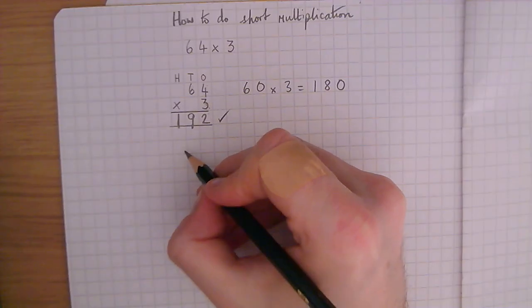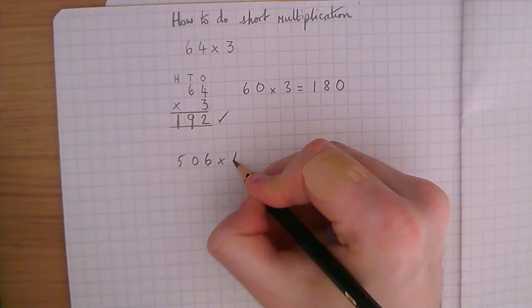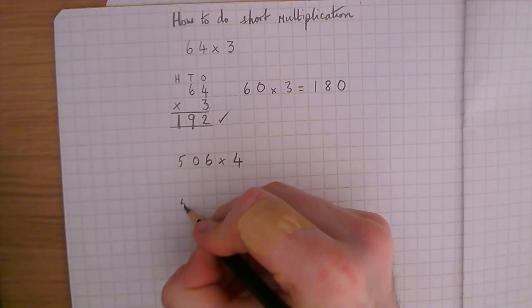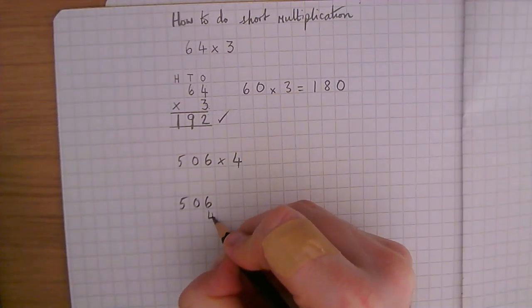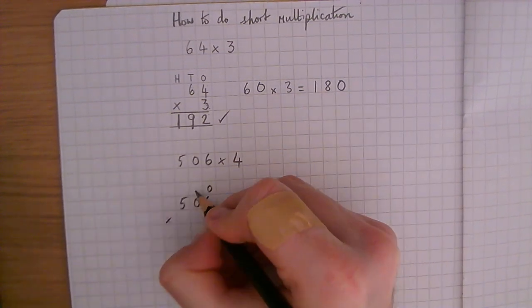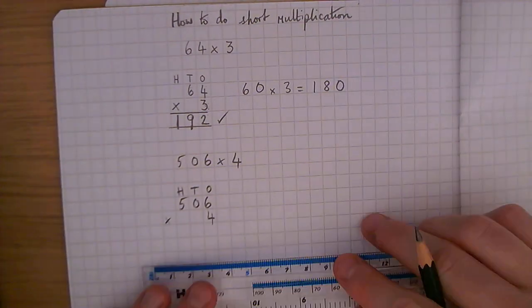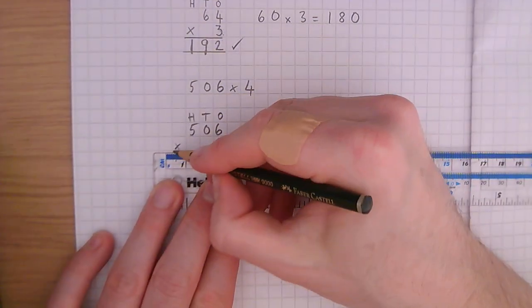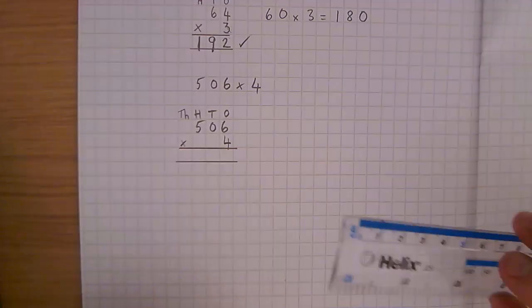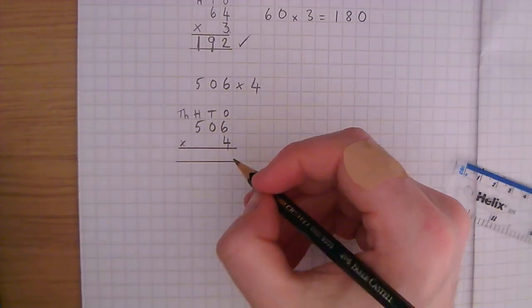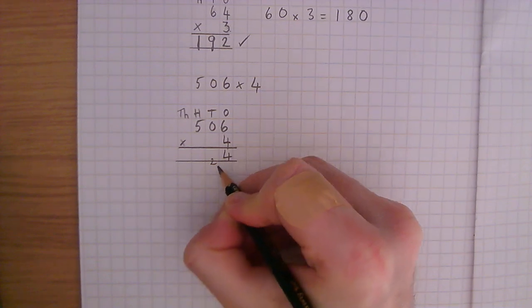Let's look at another example now. So we've got 506 multiplied by 4. Let's write 506. And our 4 is going to go there. Let's label again the ones, the tens, and the hundreds. Let's add in the ones this time as well. 4 times 6. Use your fingers if you're not sure. I know the answer for this one is 24.